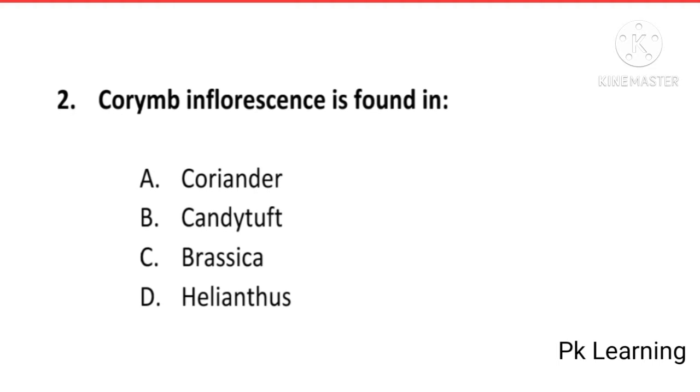Question 2: Corymbose inflorescence is found in: A. Coriander, B. Candytuft, C. Brassica, D. Helianthus. The answer is B, Candytuft. Corymbose inflorescence is found in Candytuft, B is the correct option.